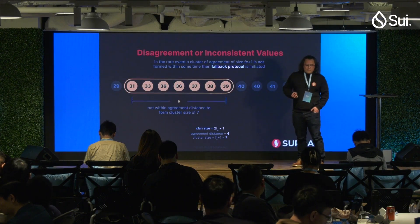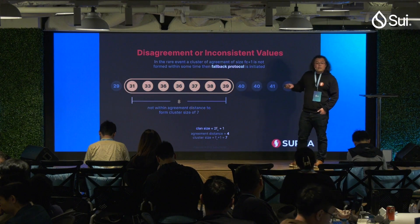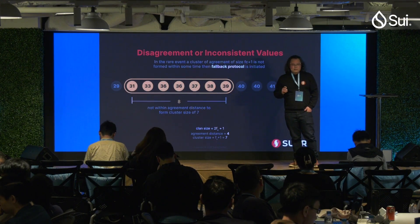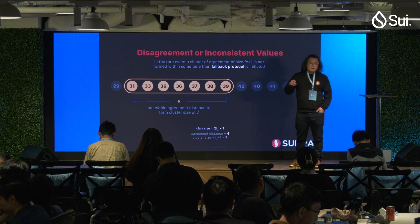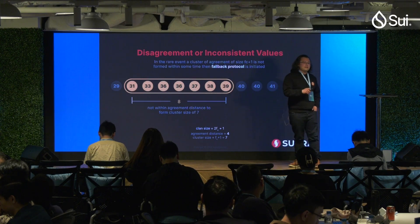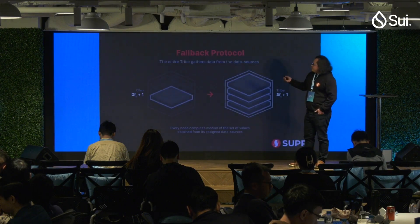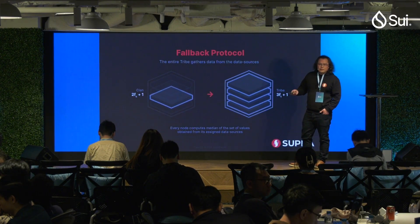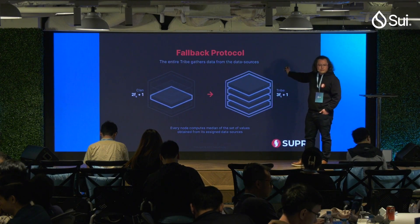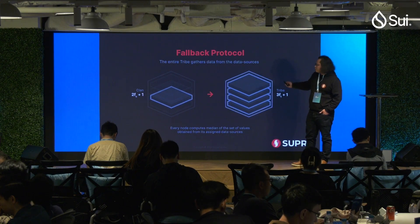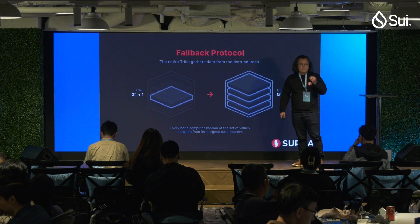What happens if we can't achieve a coherent cluster? We do have a fallback protocol. Solving the oracle problem is very difficult because you have to solve Byzantine fault tolerance and also deal with the secondary issue of data sources themselves being Byzantine. If we can't achieve the coherent cluster and cryptographic agreement, we fall back to the traditional model where everyone participates and we need two-thirds to reach agreement. This fallback protocol only triggers upon certain conditions if we cannot reach agreement in a clan.